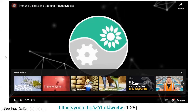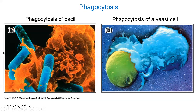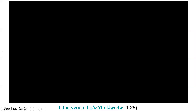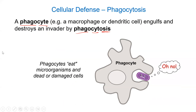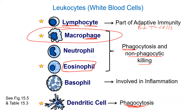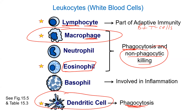That was a cute little animation on phagocytosis. That's what a lot of these cells are doing — that's how they're killing pathogens. Macrophages and dendritic cells are doing a lot of phagocytosis. So what are some of the other cells doing? That's what I want to talk about next.